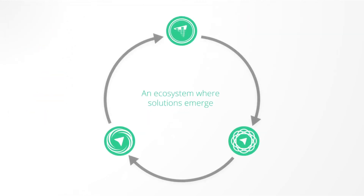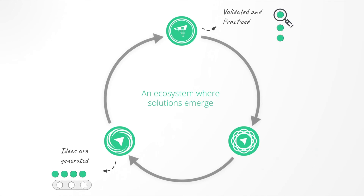It is when these three key elements come together that solutions are enabled to emerge and global scale can be reached. In this closed-loop ecosystem, built on a philosophy of openness, ethical AI, and learner data ownership, innovation accelerates to help everyone reach their potential. Ideas are generated, validated and practiced, then recombined, localized, and improved to suit unique contexts.